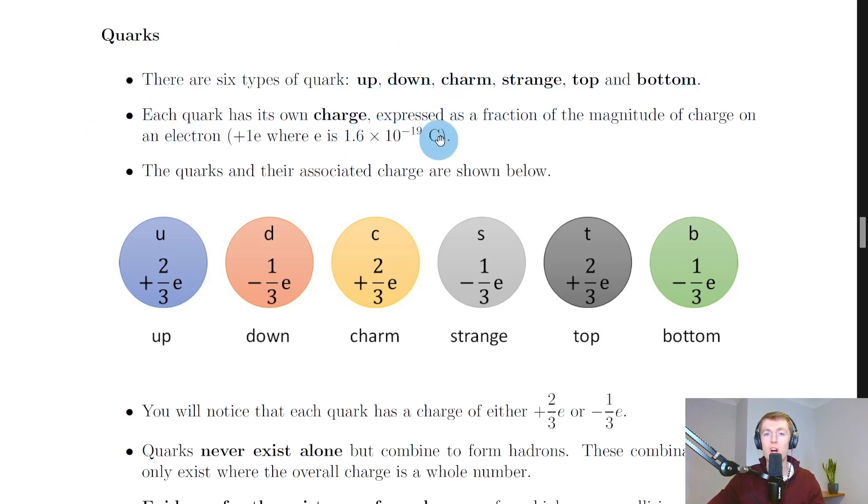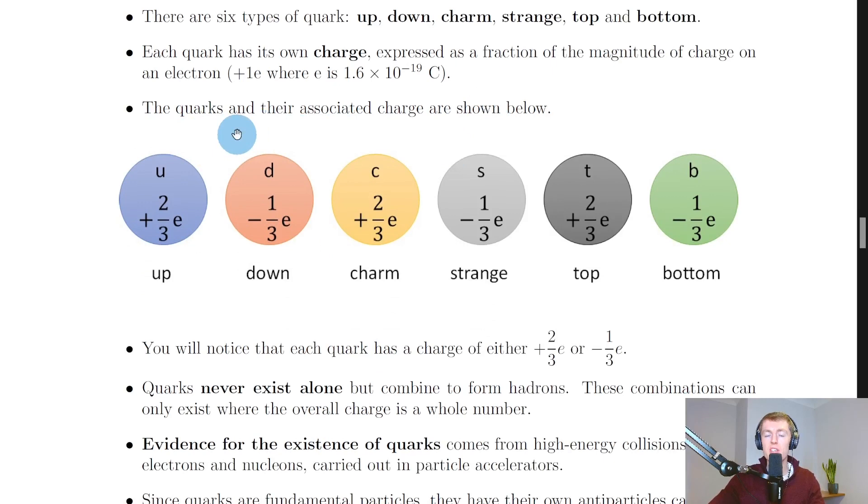Each quark has its own charge, expressed as a fraction of the magnitude of charge on an electron, which is plus one e, where e is the magnitude of 1.6 times 10 to the minus 19 coulombs (which is on your data sheet in the exam). The quarks and their associated charges are shown below, and it's a good idea to remember the charge on each quark in terms of this magnitude.